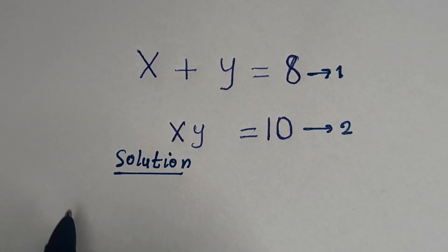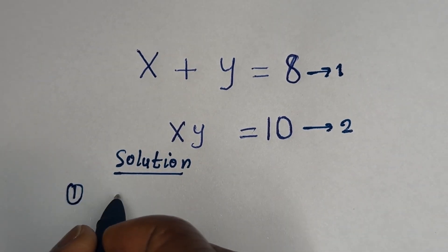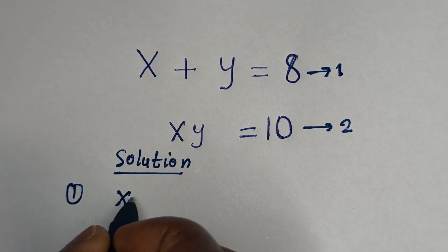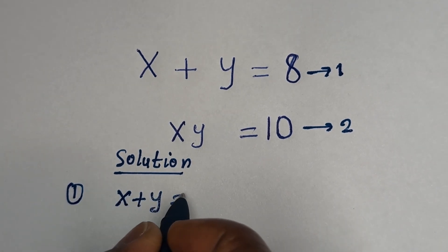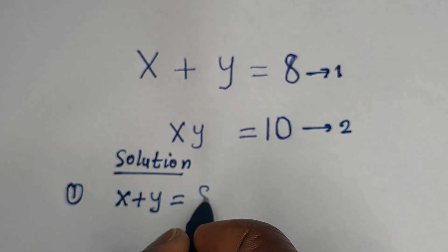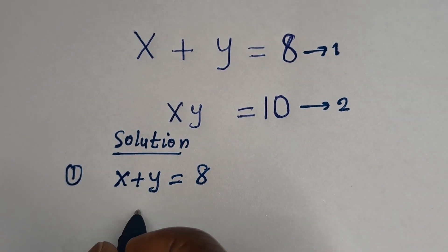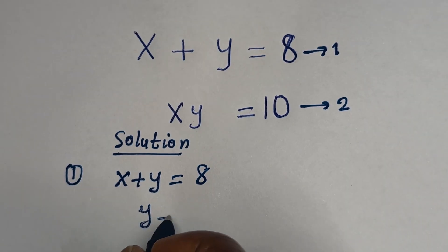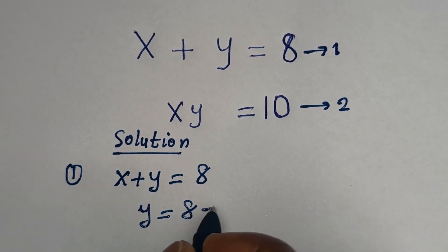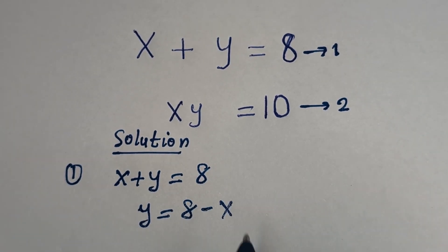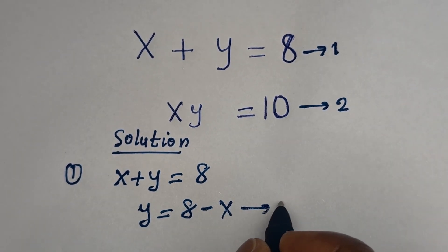So from equation 1, x plus y is equal to 8, which gives us y is equal to 8 minus x. Let us call this equation 3.